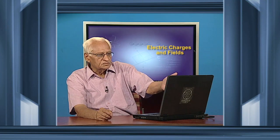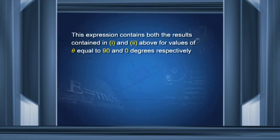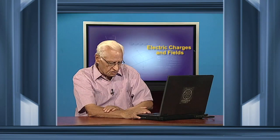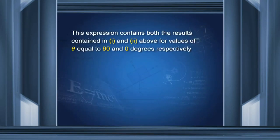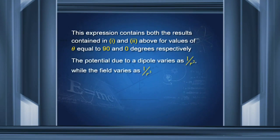This general expression contains both special results: putting θ = 90° gives the result for the equatorial line, and θ = 0 gives the result for the axial line. An important observation is that the potential due to a dipole varies as 1/r², whereas the electric field varies as 1/r³.